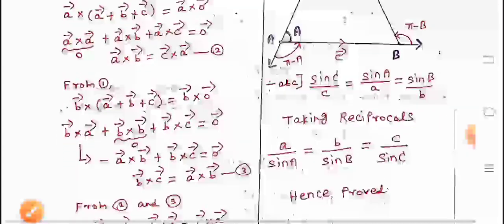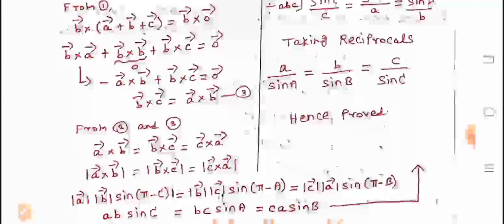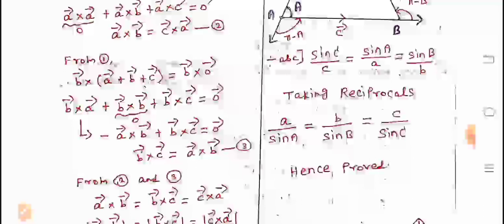From equation 1, pre-multiply by B vector: B cross A plus B cross B plus B cross C equals zero. B cross B becomes zero vector. B cross A can be written as minus A cross B. So minus A cross B plus B cross C equals zero, which means A cross B equals B cross C. Mark this as equation 3. From equations 2 and 3: A cross B equals C cross A, and A cross B equals B cross C. Therefore, A cross B equals B cross C equals C cross A.